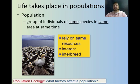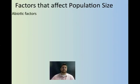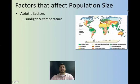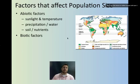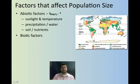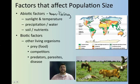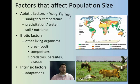Think about what are some factors that can affect a population. You could have abiotic factors, like sunlight and temperature, or precipitation and water, soil and nutrients — abiotic means non-living. Or you could have various biotic factors, like other living organisms: prey, competitors, predators, parasites, disease. All of these are things that could influence that population. And there's certain intrinsic factors, like adaptations — whether or not that particular species is even adapted to live in that type of environment.